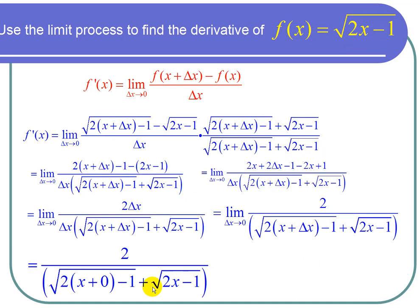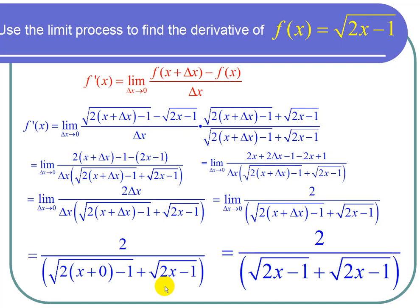Well, it's nice I got a root 2x minus 1 here, and a root 2x minus 1 here. And that's 2 times root 2x minus 1. So the 2's cancel, and my final answer is 1 over the square root of 2x minus 1.